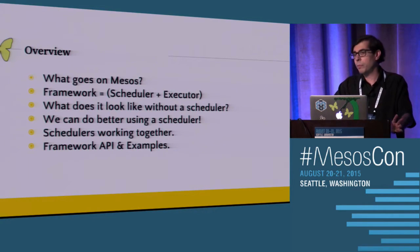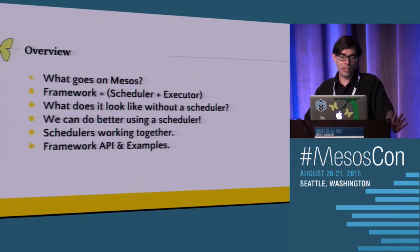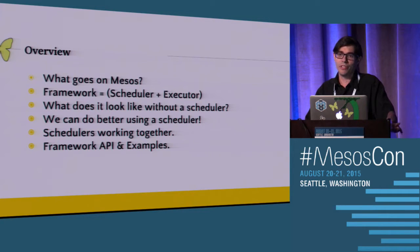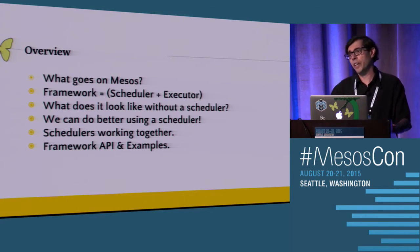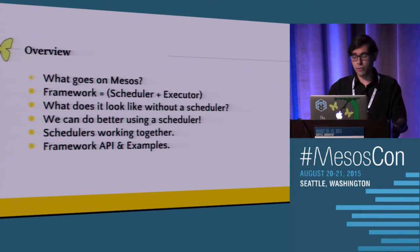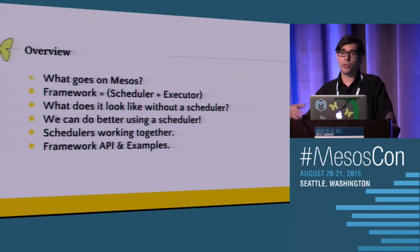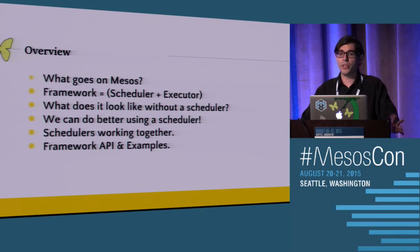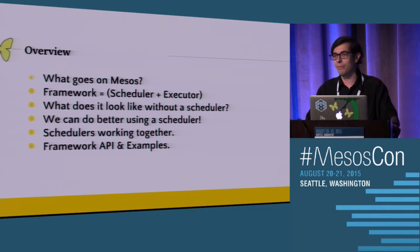So we're going to be talking about developing frameworks with Mesos today. We'll quickly chat about what goes on Mesos, then start to dive deeper talking about frameworks - really explaining what a scheduler is, what an executor is, how they work together. I'll talk about what it looks like when you don't have a scheduler, so you can understand the problems you can solve by using one. Then we'll walk through scheduler orchestration with schedulers, and go through the framework API with examples. The point is everyone should leave here wanting to build frameworks for Mesos.